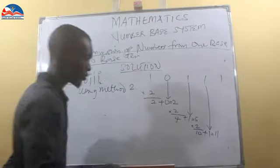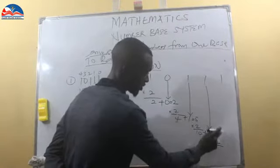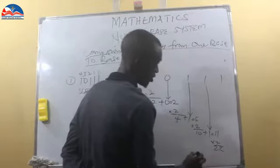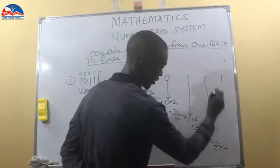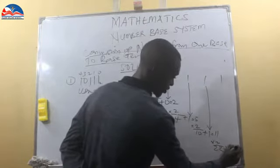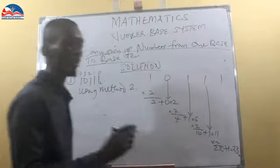Now 11 times 2 progressively, 11 times 2 gives us 22, plus the next number 1, 22 plus 1 gives us 23. So this is 23 base 10.